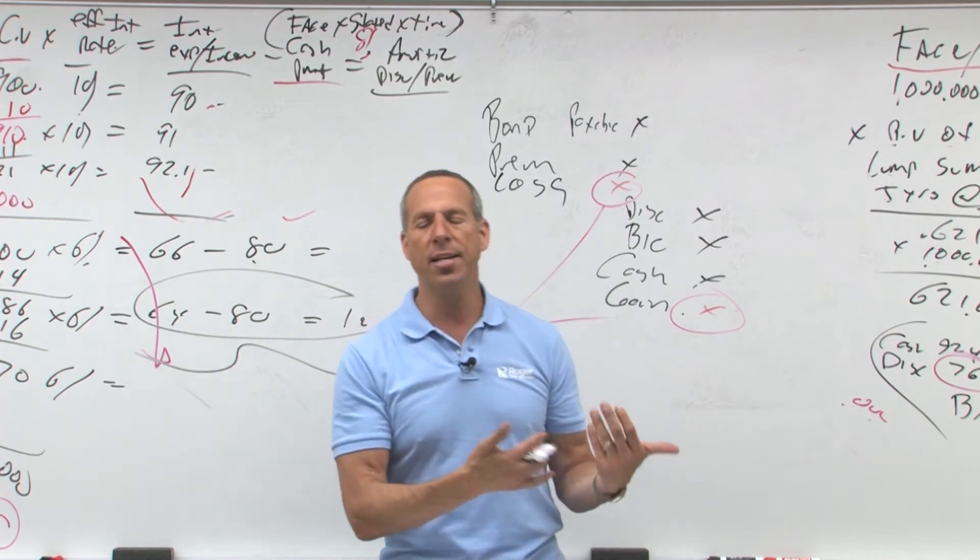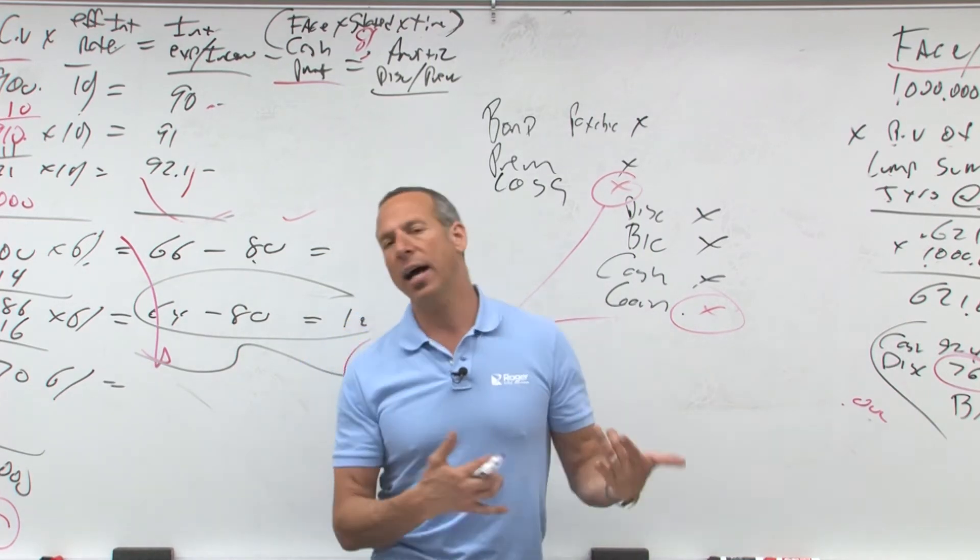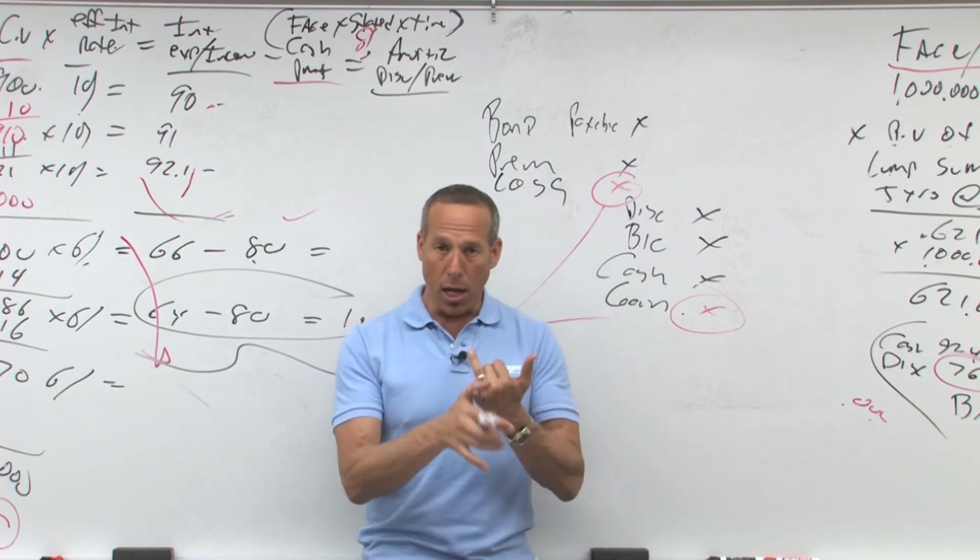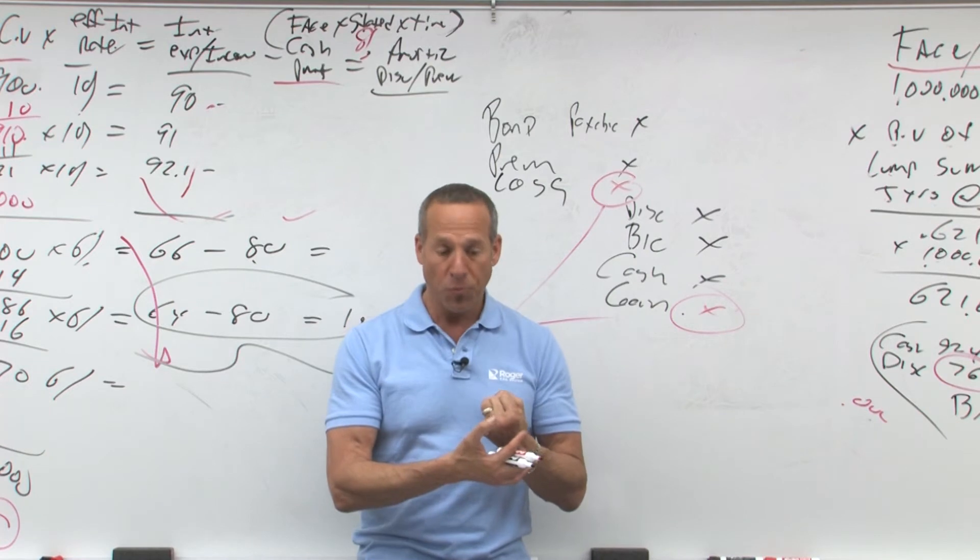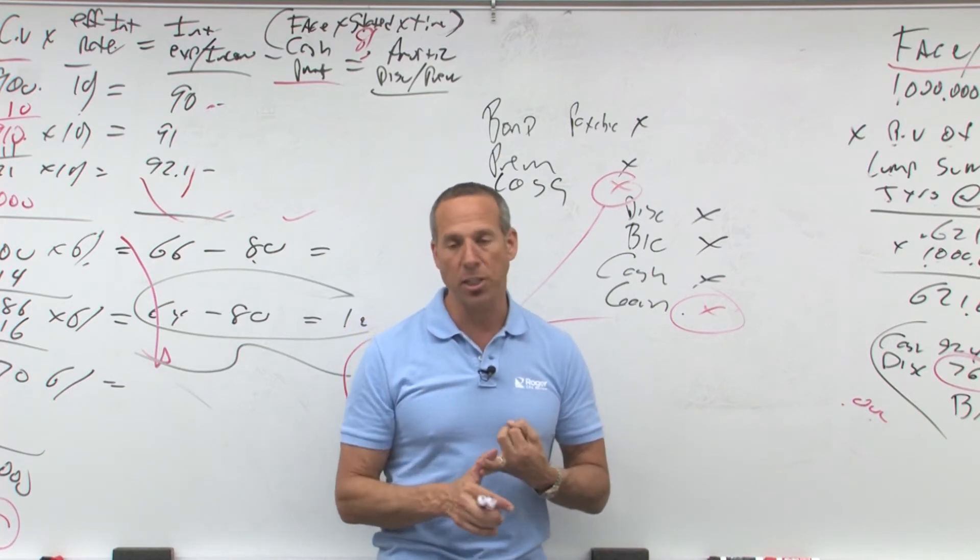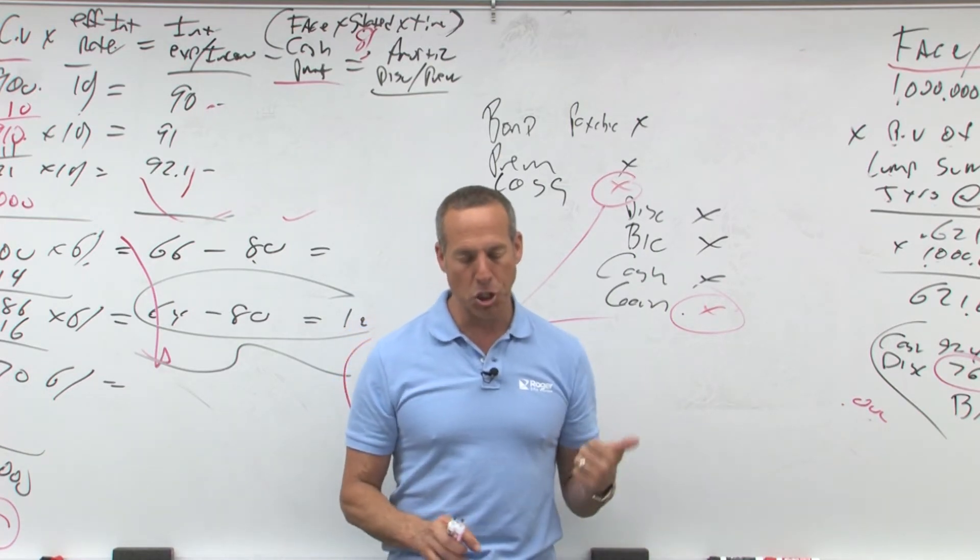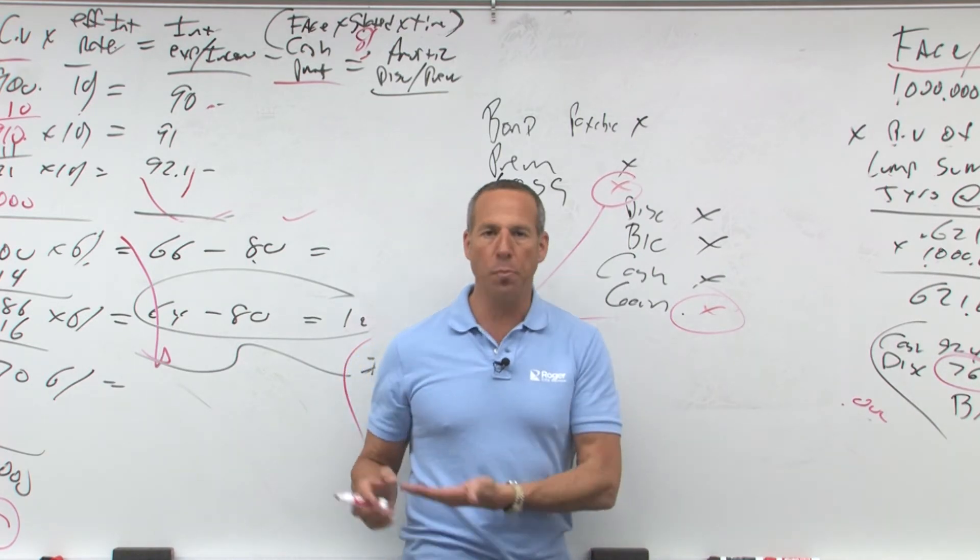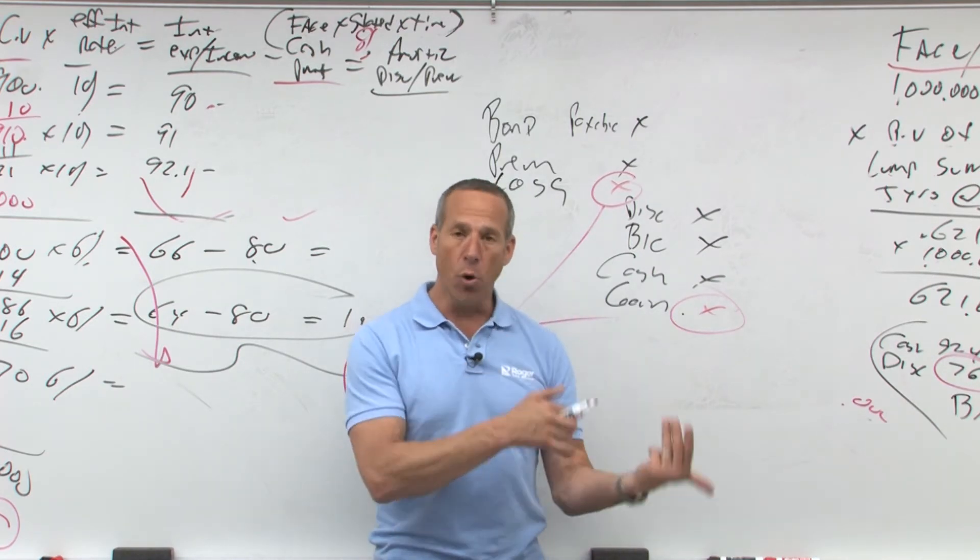Then as times changed it said, well, rates aren't that high, it's not that much, let's make it as ordinary. Now they said it could be ordinary from continuing operations, it could be extraordinary. If it's unusual in nature and in frequency of occurrence, they've never done this before, it could be extraordinary. Otherwise it would be ordinary.